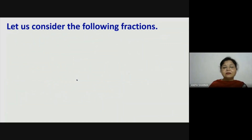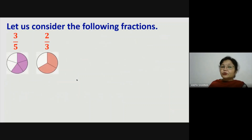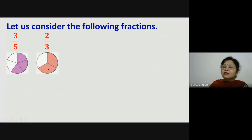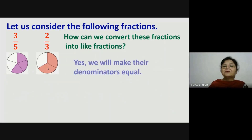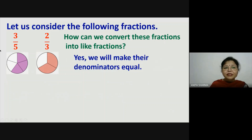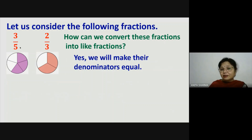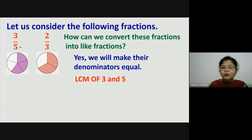Consider the fractions three-fifths and two-thirds. These are unlike fractions — the divided parts are not equal. So how can we convert these fractions into like fractions? We will make the denominators equal. For that, we are going to take the LCM of 3 and 5, which is equal to 15.